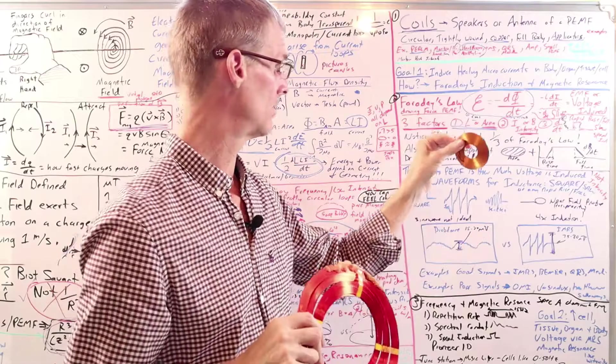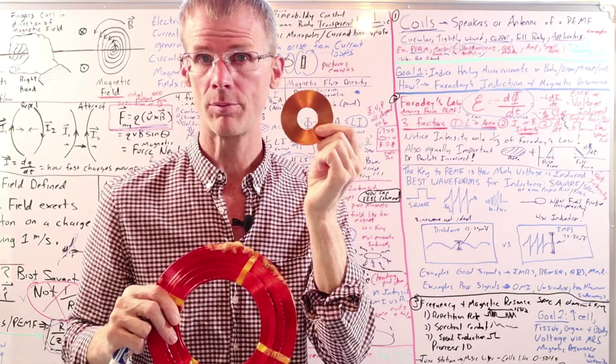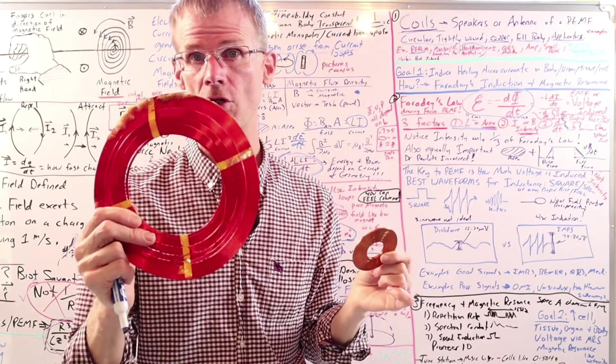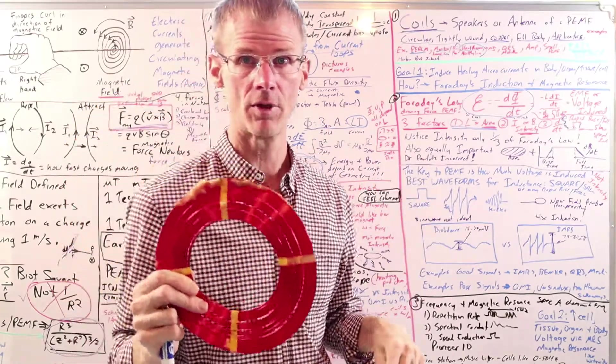And how is that possible? Because induction comes from these three factors. It's not just intensity. This is a small coil in a poor waveform. So even though it has a higher intensity, it's not going to induce as much current in your tissues because it doesn't have a large coil and it doesn't have a rapid rise and fall signal like the IMRS does.